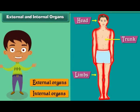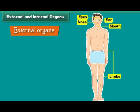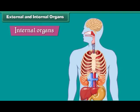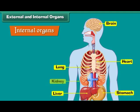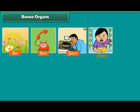The organs that can be seen from outside are called external organs — for example, eyes, ears, nose, mouth, and limbs. The organs that cannot be seen from outside are called internal organs — for example, brain, heart, lungs, stomach, liver, kidneys, and bones.